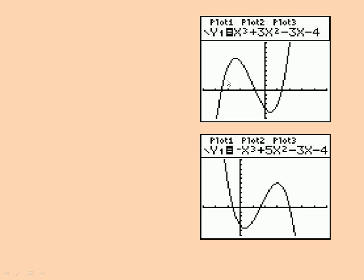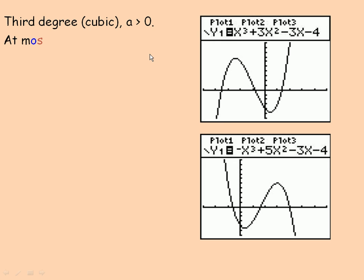Flipping over to the next page, these are both cubic functions, or third degree functions. The leading coefficient is greater than zero here, and if the leading coefficient of a cubic is greater than zero, its end behavior goes from quadrant three to quadrant one. It can have at most three roots. This one actually crosses the x-axis in three places. It's possible for it to cross in less than three places, but it does have to cross in at least one.